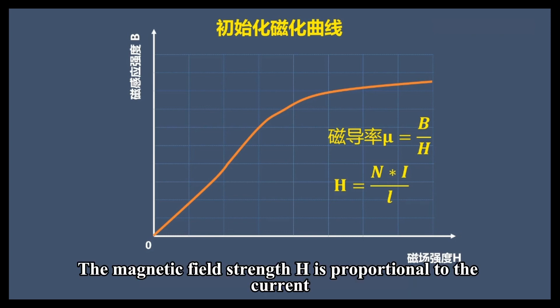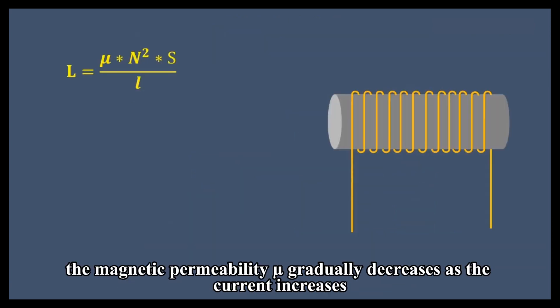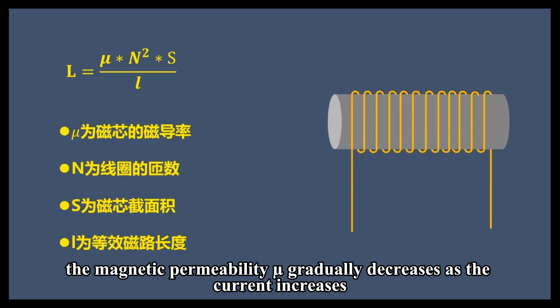The magnetic field strength H is proportional to the current, so after the current reaches a certain value, the magnetic permeability gradually decreases as the current increases.